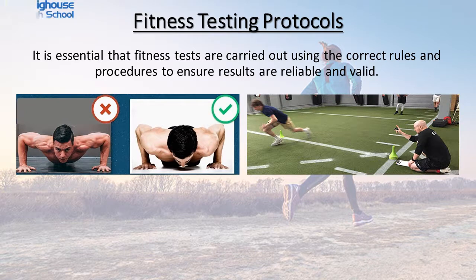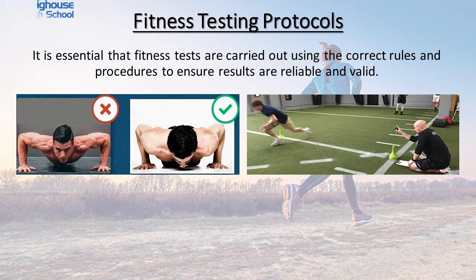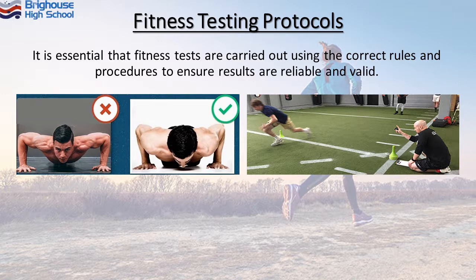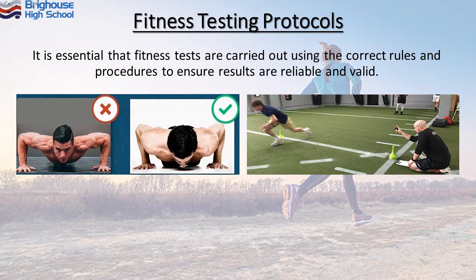When measuring these tests — for example, using a stopwatch for the 30 metre sprint test — the reliability of the timing is based on a human pressing the stopwatch at the correct time. Whereas some athletes will use timing gates, which use technology and are often more reliable in these circumstances.